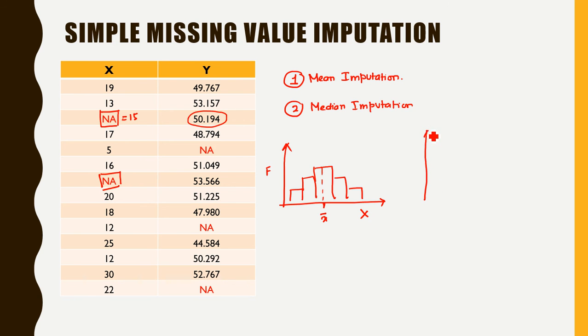Now suppose I plot the histogram for the variable x and it turns out to be somewhat very skewed. Of course, the mean being affected by the extreme values will tend to drag towards the extreme values. So mean will be somewhere here, but the median will still be lying in the middle. So in that case, median imputation is likely to give a better result.